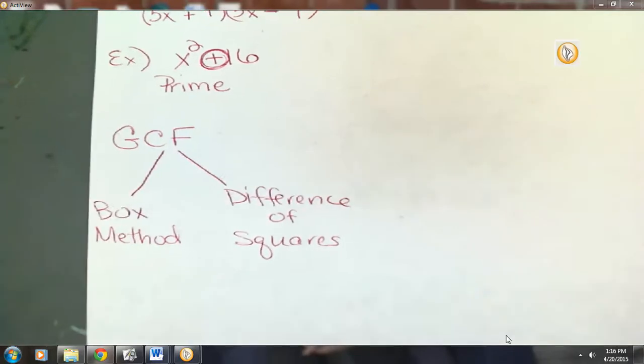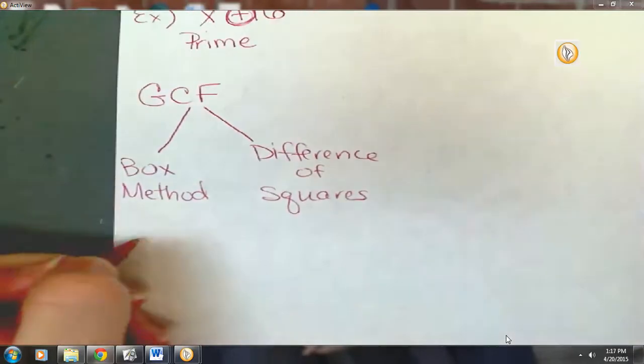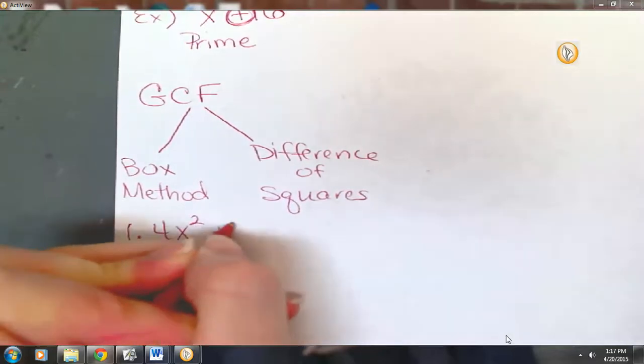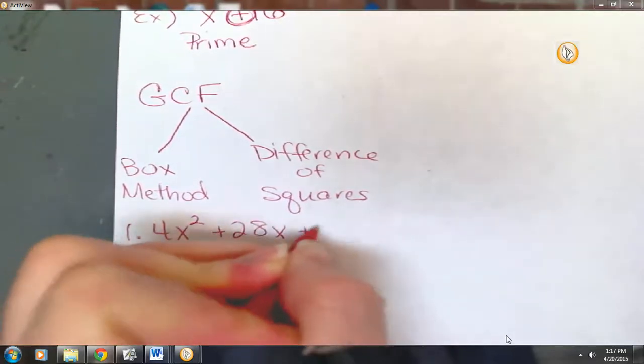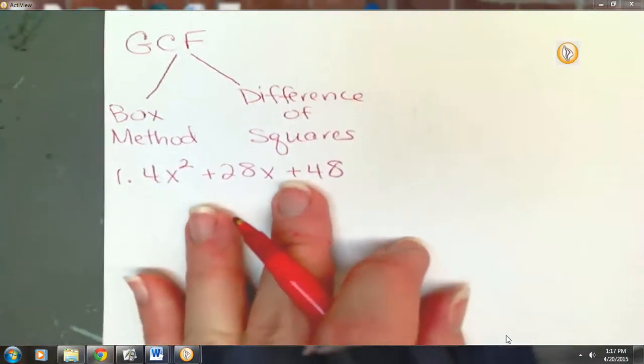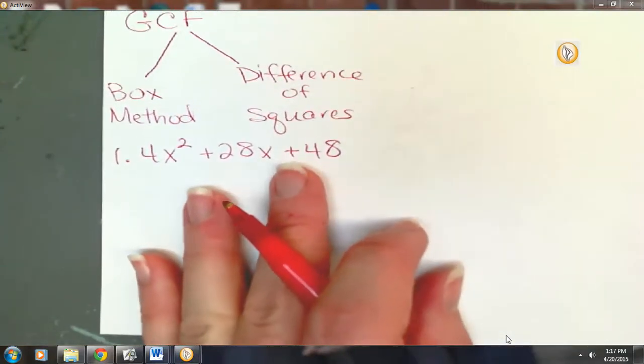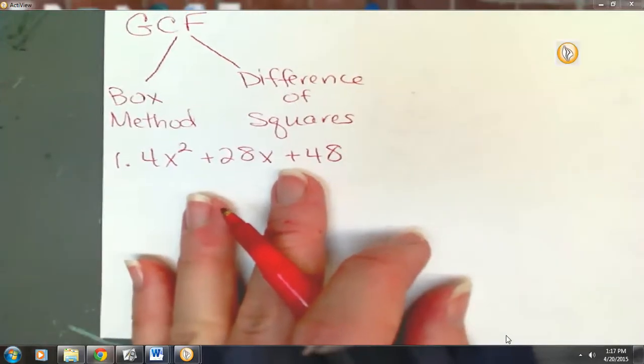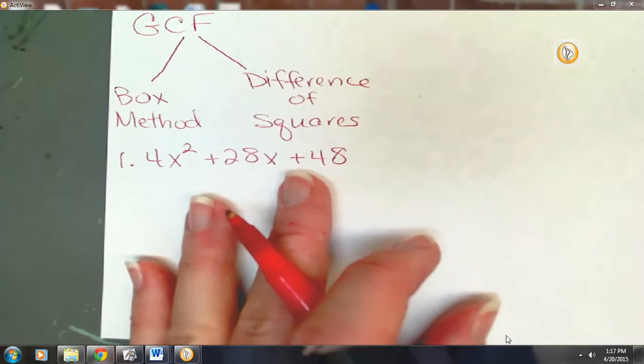All right. So let's look at problem number one. What factoring method would you try first? Greatest common factor. Good. Greatest common factor. Now, is this one that you could even think about doing difference of squares with? No. Why? There's three terms. There's three terms. And typically, three terms, what do we do? Three terms, three terms, what do we typically do? Okay, we might do greatest common factor, but with three terms, we typically would do box.